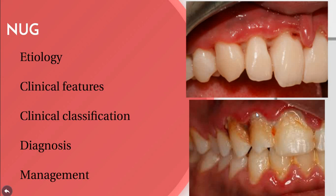In some cases, ulcerations may develop on the cheek, lips, tongue, palate, and pharyngeal area. If untreated, the condition may result in progressive destruction of the periodontium and denudation of the roots, accompanied by increased severity of complications such as regional lymphadenopathy. Systemic complications may include high fever, increased pulse rate, loss of appetite, and generalized lassitude.